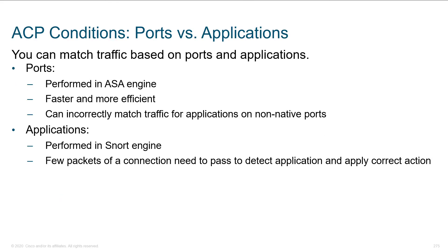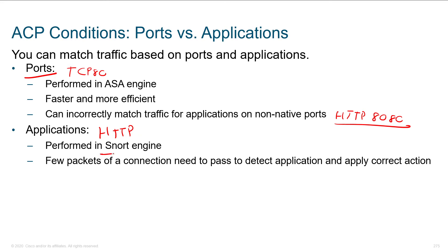When we talk about ports, it means telling the firewall: when you see HTTP, I specifically mean TCP port 80. If HTTP is running on port 8080, the firewall using port-based matching won't catch it — it's only looking at TCP 80. Alternatively, if you use the application name 'HTTP' instead of the port number, the Snort engine is smart enough to automatically detect HTTP on non-standard ports.